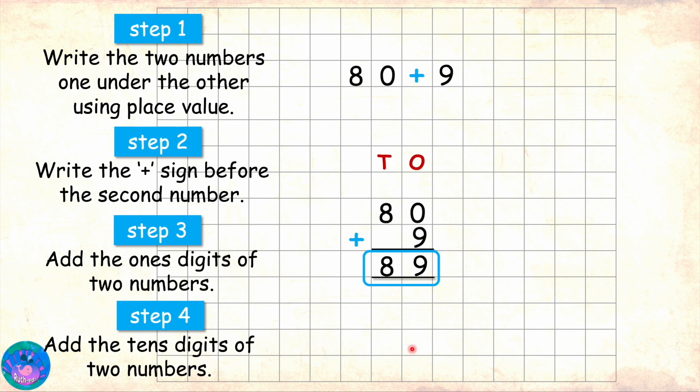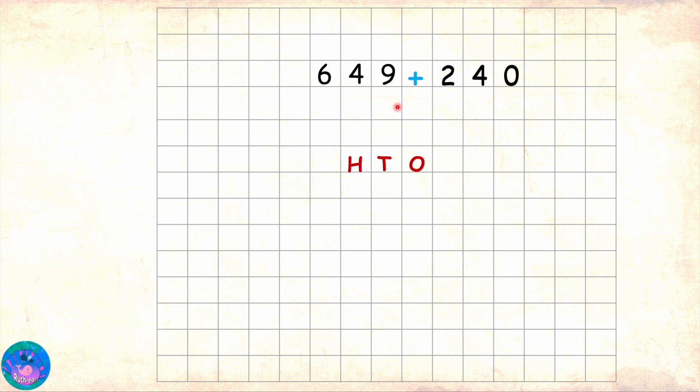Miss R, you said that we can use vertical addition for adding large numbers as well. Can we see addition of bigger numbers? Sure! Let's take 649 plus 240. You already know that three-digit numbers have hundreds, tens, and ones places. This H denotes the hundreds place.